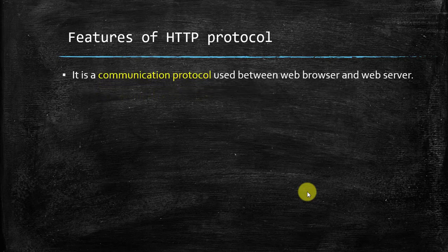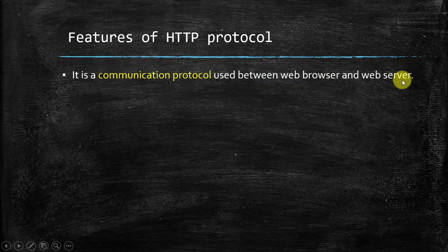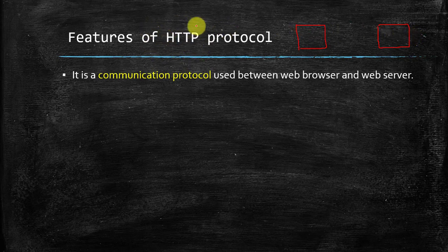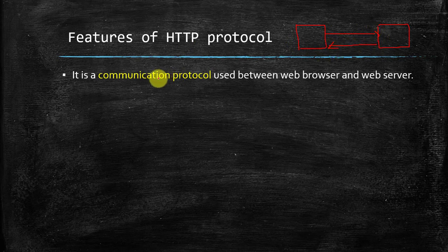The first feature of HTTP protocol is that it is a communication protocol, and it is used to make the communication between a web browser and a web server. Suppose this is our web browser, this is our client PC, and this is our server PC. To make communication between the web browser and server, we use HTTP protocol. So we can simply say that HTTP protocol takes part in the communication between web browser and web server, and that's why it is also called a communication protocol.